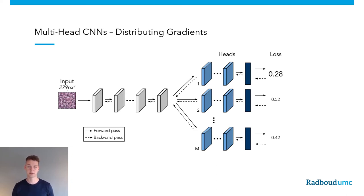Here is an example of how we do this. We have illustrated the multi-head CNN with its shared part in white and the different end parts in blue — the heads. We can then measure the loss for each individual head. To promote specialization, we will distribute gradients during training and assign the biggest gradient update for the winning head. In this case, the first head will specialize the most for this specific input pattern.